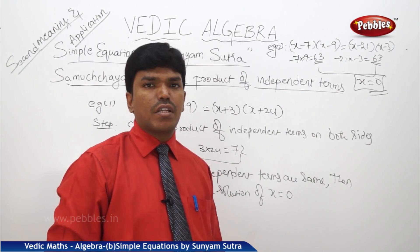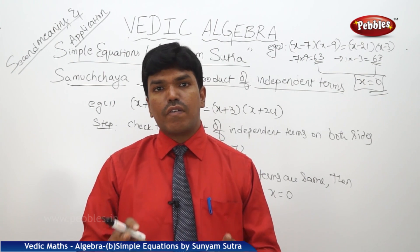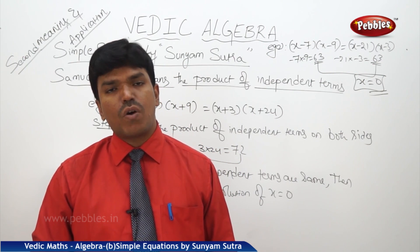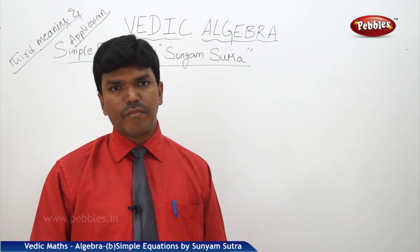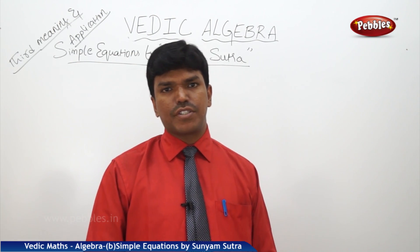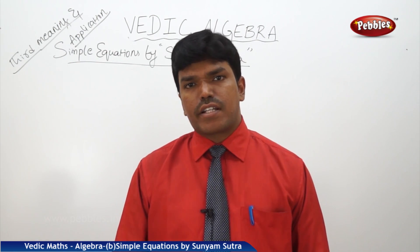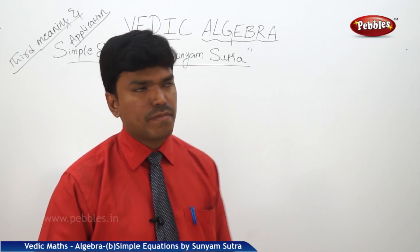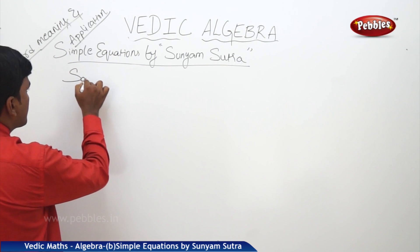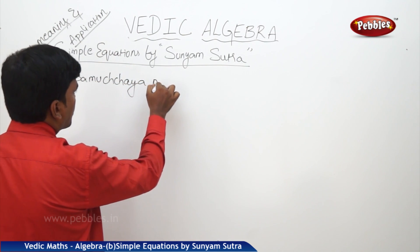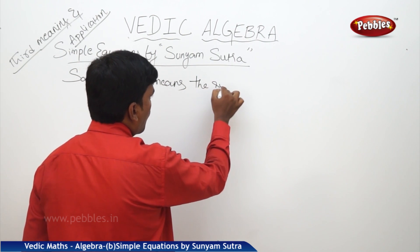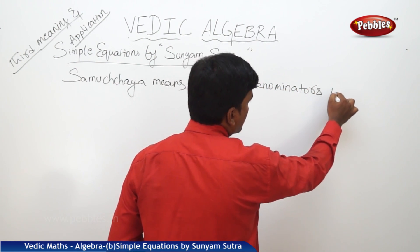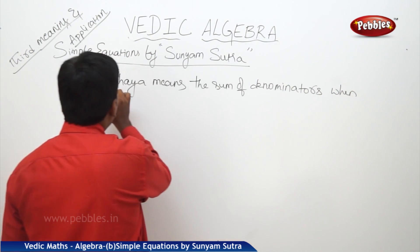So, whenever we observe the products of the independent terms on both sides are equal, the solution of x will be 0. Now let us see the third meaning and its application. In another context, Samuchaya means the sum of the denominators when the numerators are the same.